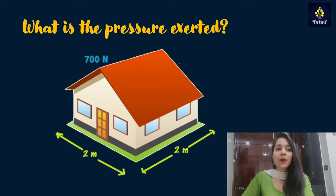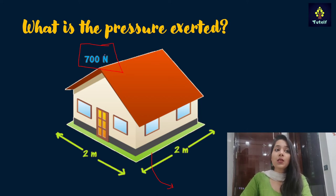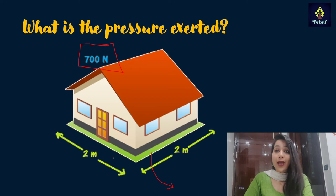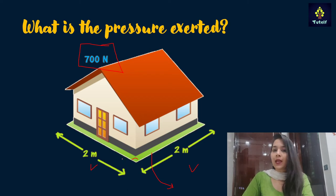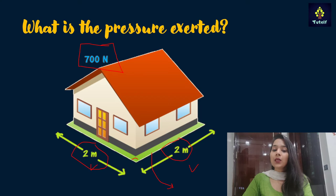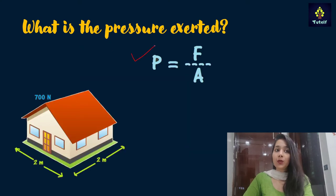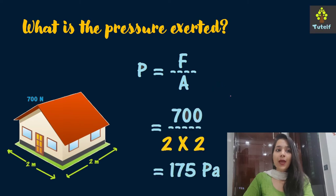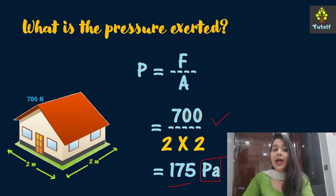Let's solve a question: what is the pressure exerted at the base of a house? We are given the force as 700 newton. The base is a square — length and breadth are equal — so the area is 4 meter square. Using pressure equals force divided by area: pressure equals 700 newton divided by 4 meter square, giving us 175.